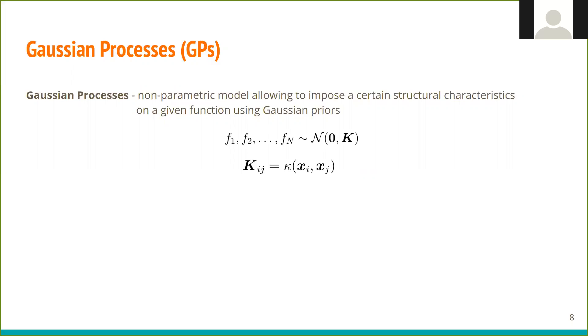Mathematically, the values of function f are drawn from a normal distribution, with covariance matrix k defined through kernel that measures correlation between function values, a similarity between the corresponding inputs.